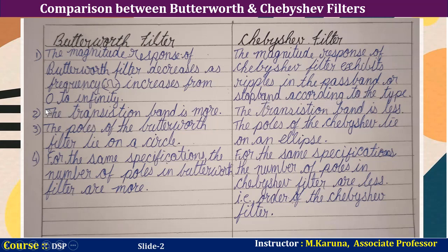The transition band of the Butterworth filter is more, whereas in the case of the Chebyshev filter the transition band is less.